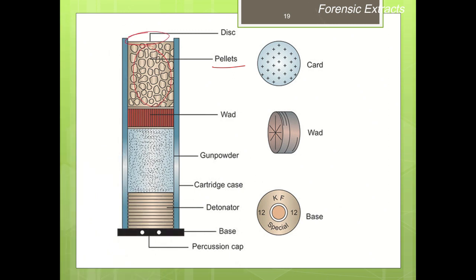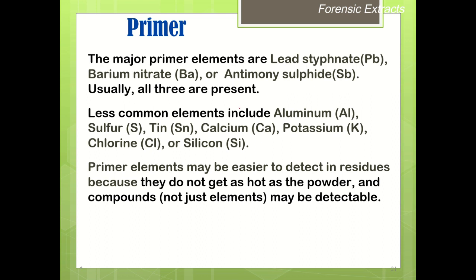In a shotgun cartridge, there are different components to keep the shot and other substances in place: the wad, the gunpowder, and the primer or detonator. The wad acts as a piston — it moves forward and propels the pellets out of the cartridge due to the effect of gases. When the gunpowder burns, explosive gases are produced, pushing the wad and further propelling the pellets out of the cartridge.